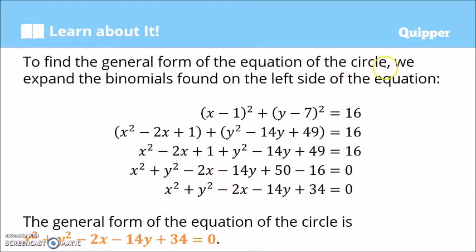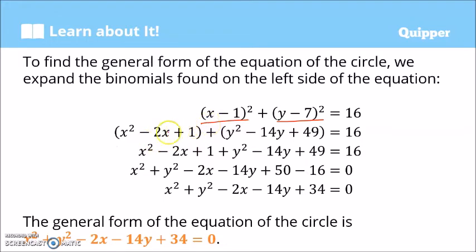To find the general form of the equation of the circle, we expand the binomials found on the left side of the equation. Expanding (x − 1)², this is just (x − 1)(x − 1). You can use the FOIL method, giving x² minus twice the product of x and 1 — that is 2x — plus the square of 1, which is 1. So (x − 1)² expands to x² − 2x + 1.